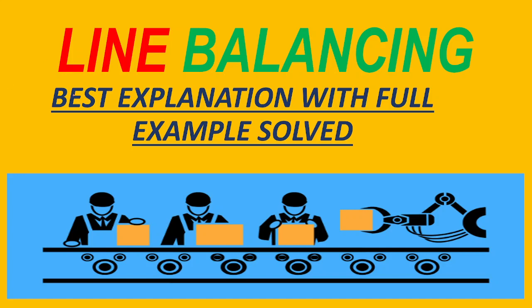There are two rules by which we can assign tasks to workstations. The first rule is to assign tasks in the order of most following tasks. The second rule is to do the assignment in accordance with the greatest positional weight. In this particular video, we will discuss the first rule — assign the task in the order of most following tasks. Now let's look at the question.